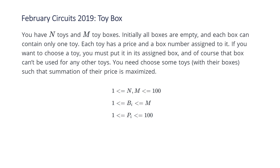It's a really straightforward problem. The solution is basically just to construct an array, vector, or list and keep track of the maximum price for that box for the corresponding toys. We basically just loop through all of our input for each toy and its corresponding box. We set the box's max so far equal to the maximum of the current toy price and the maximum that we've seen up to this point. Once we finish that, we just sum all those maximum prices and return that value.